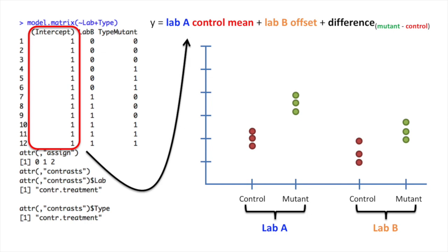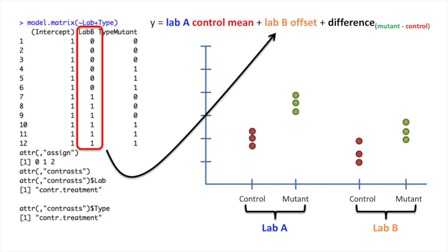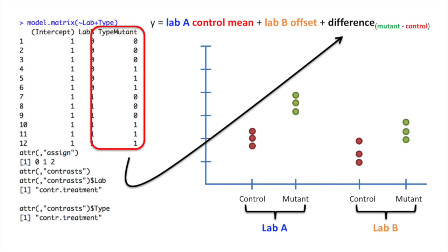The first column in the design matrix is multiplied by the term for the lab A control mean. This means that this value is on for every single measurement in the dataset. The second column is multiplied by the lab B offset. That means that this offset is only on for the data generated by lab B. This last column is multiplied by the term for the difference between the mean of the mutant data and the mean of the control data.